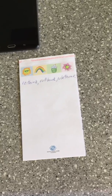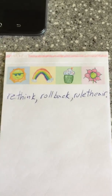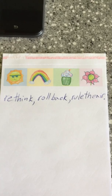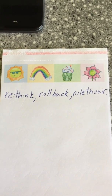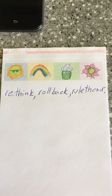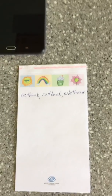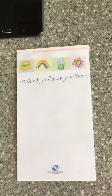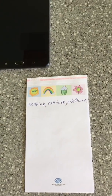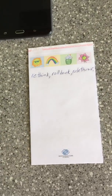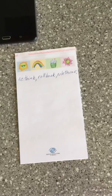The one that worked for me was the middle option. You can try all three of them, but the one that worked for me was 'rollback.' As soon as I put in that password and pressed rollback, a different screen came up.